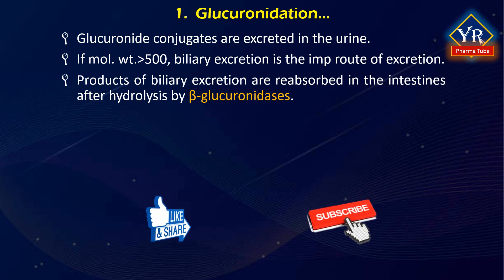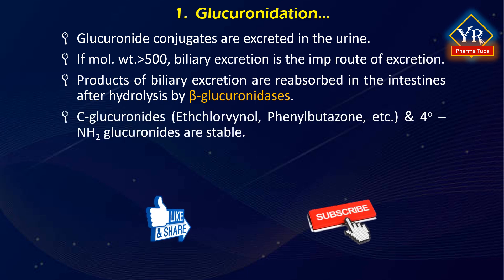Most glucuronides are hydrolyzed by beta-glucuronidases. However, C-glucuronides, for example phenylbutazone, and some quaternary amine glucuronides are stable to beta-glucuronidase.